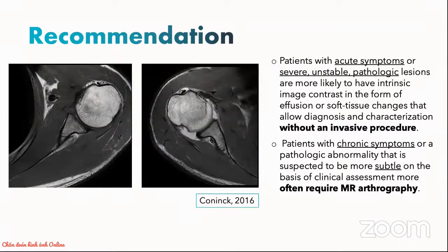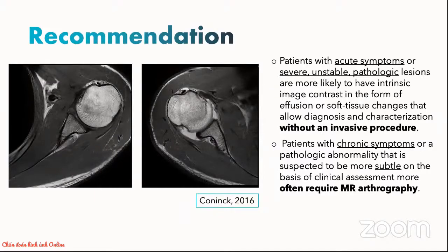A good guideline to follow is that if your patient just had a recent dislocation or has very severe instability symptoms, you might be able to get away with a routine MRI because they tend to have some inherent joint effusion that is reactive. On the other hand, if you have a patient with very chronic or vague symptoms, they are unlikely to have any underlying joint effusion, so giving some contrast into the joint to distend it will probably increase our diagnostic accuracy.